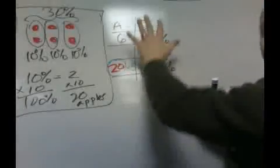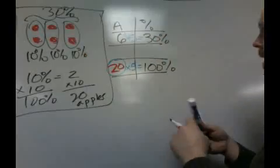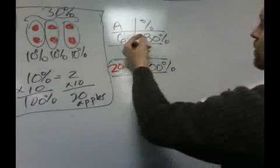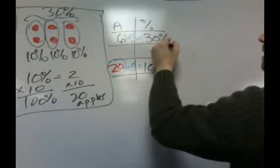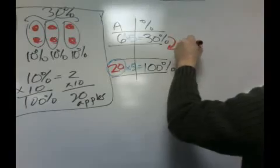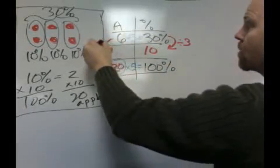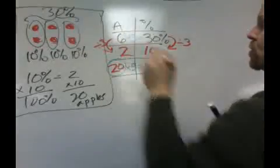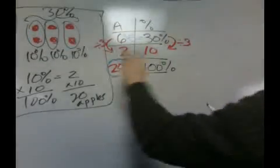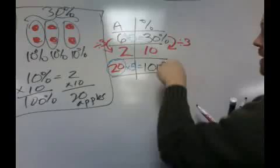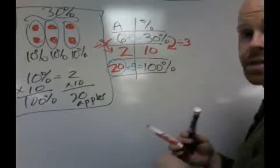Another way, using this very same table to figure it out, is we could use division and divide this by three, which gives us 10%, divide this by three, which would give us two apples, and then it's kind of like this problem over here. Ten times 10 is 100, so two times 10 is 20.